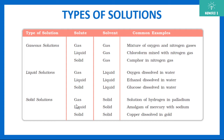For solid solutions: gas in solid — hydrogen may be present inside palladium; liquid in solid — amalgam of mercury with sodium is an example; solid in solid — copper dissolved in gold. So these are the various types of solutions where the solute and solvent can be in different states.